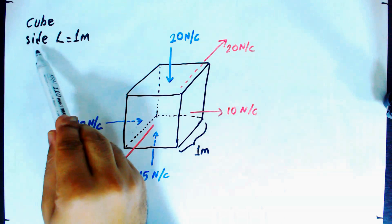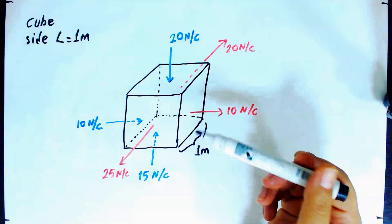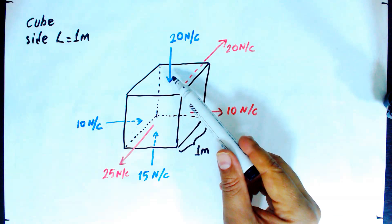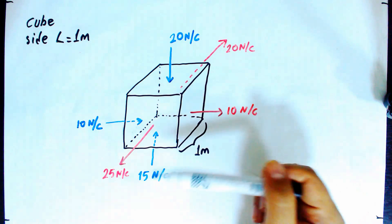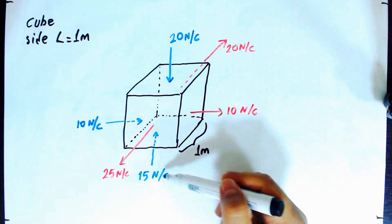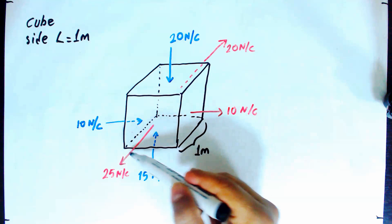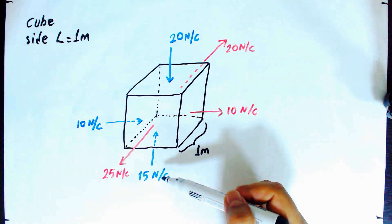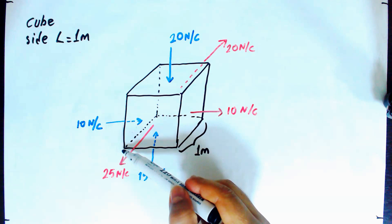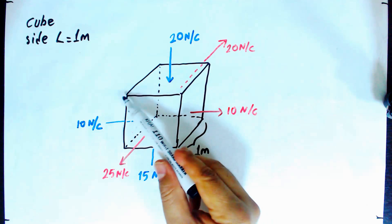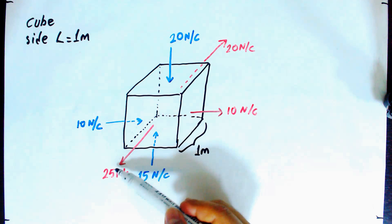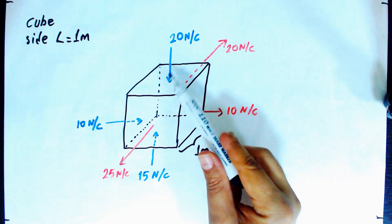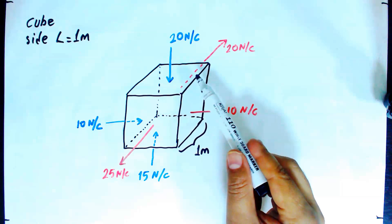We have a cube of side length 1 meter, and what you see in the picture are some electric field vectors through the faces of the cube. For example, the bottom face has a flux of 15 Newton per Coulomb into the volume, and this face has an electric field vector out of the page which is 25 Newton per Coulomb.